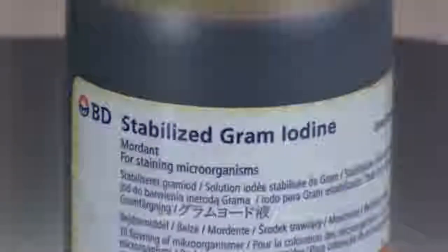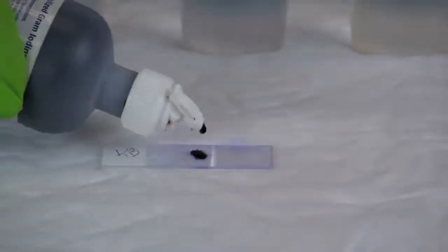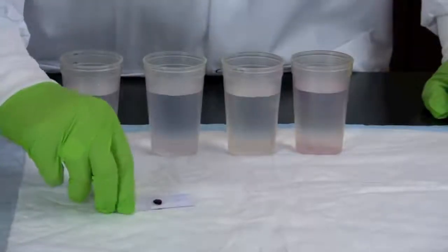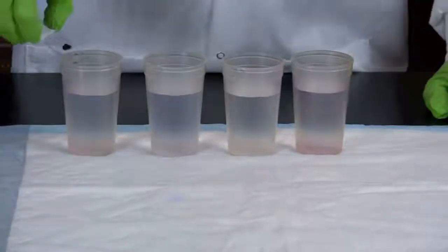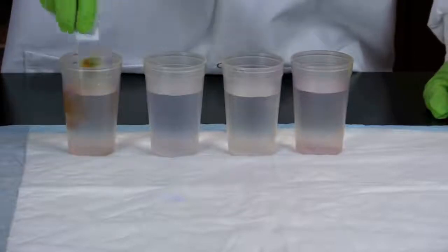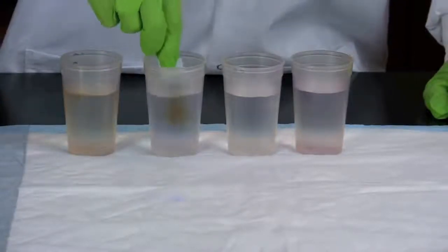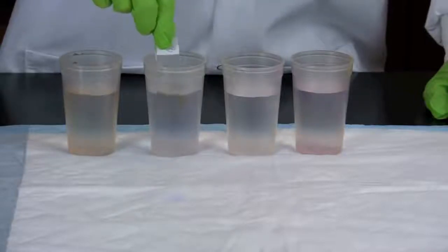Next, add a few drops of Gram's iodine to cover the bacteria and then let this stand for one minute. Rinse the slide in a beaker of water until most of the iodine is gone. A second beaker of water can be used to ensure most of the iodine has been rinsed off.